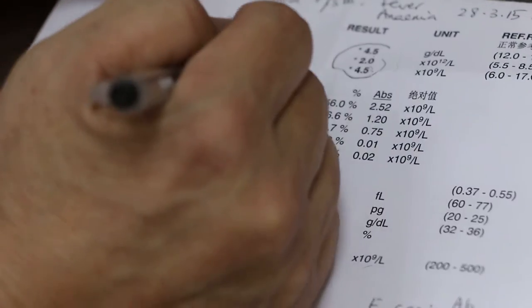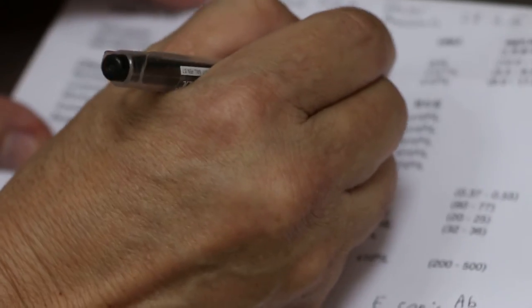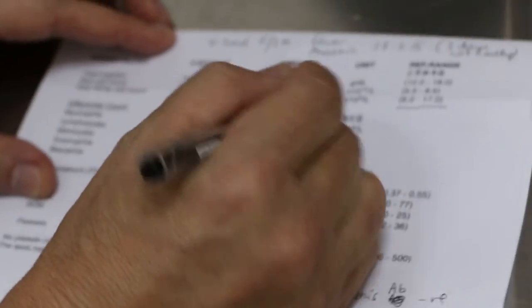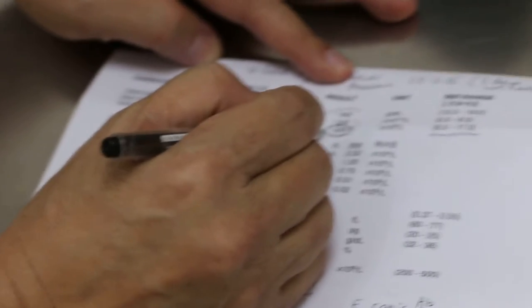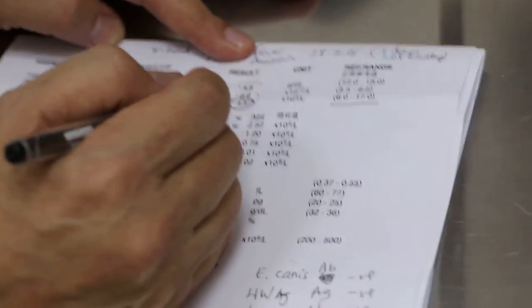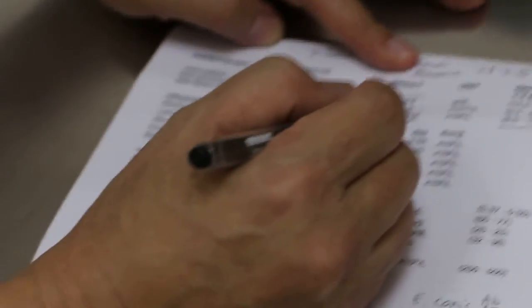Now you can see the leukocytes, 4.5. Normally it should be 6 to 17. Now 4.5 is very low. So one of the reasons would be virus, not the parvo or the distemper because the test was negative.